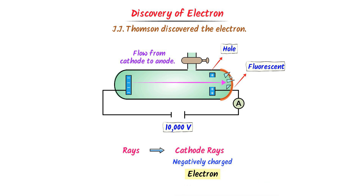Thus, Thomson successfully discovered the cathode rays, which we call electrons. If you want to learn more about cathode rays and the discovery of the electron, watch our video — the link is given in the description.